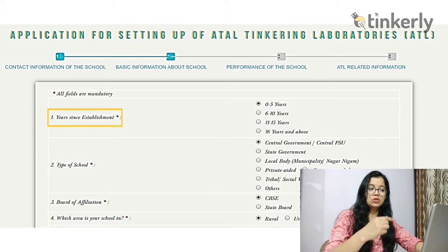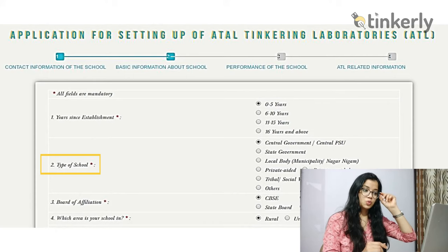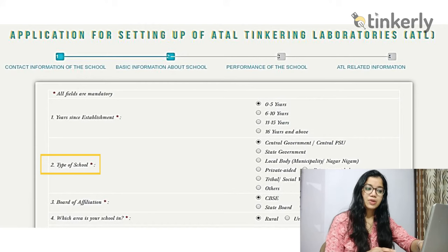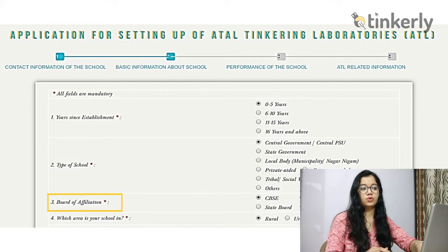Next is type of school — which category your school belongs to: central government, state government, local body, private aided, private unaided, tribal, social welfare department, or others. Select the appropriate type. Then comes board of affiliation — whether your school follows CBSE, ICSE, ISC, State Board, IB, or other. Click on the applicable board.